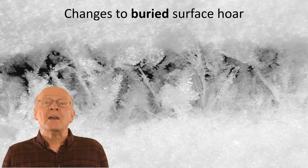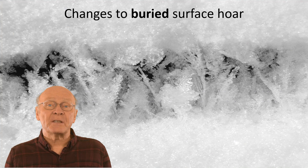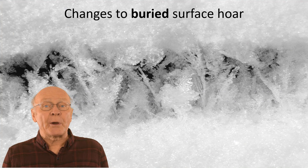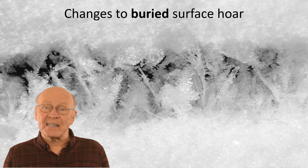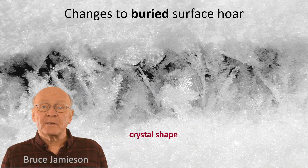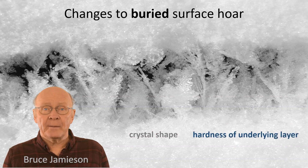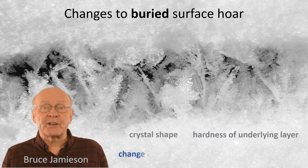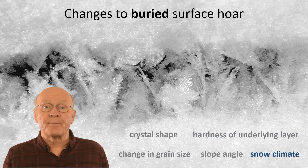In the next few minutes, we're going to outline several of the factors that can influence the strength of a barrier layer of surface oar and its likelihood of being triggered. These factors include the shape of the crystals, hardness of the underlying layer, change in grain size, slope angle, and snow climate.